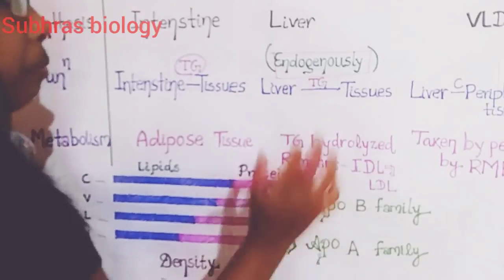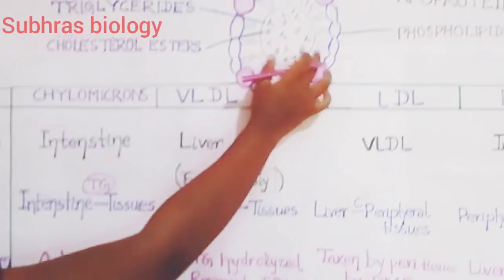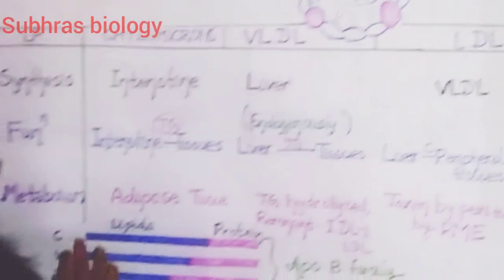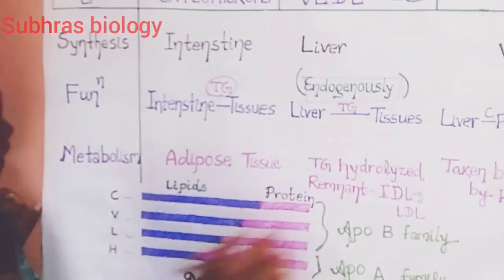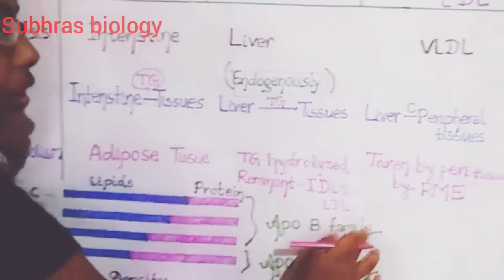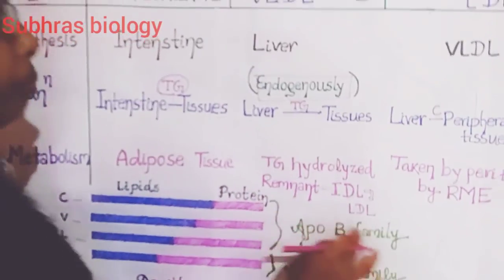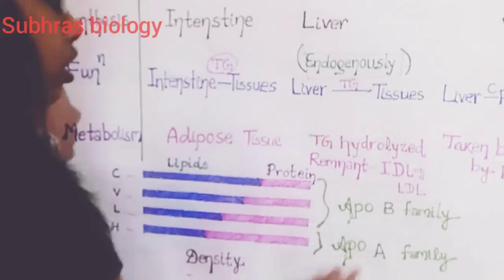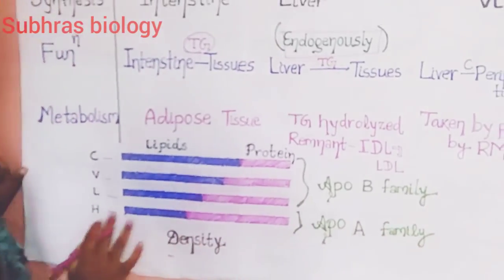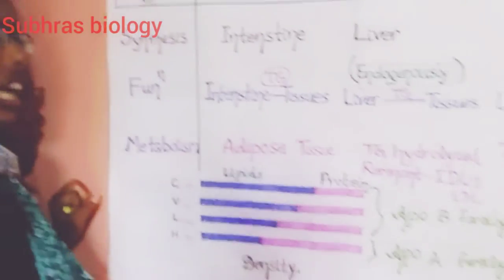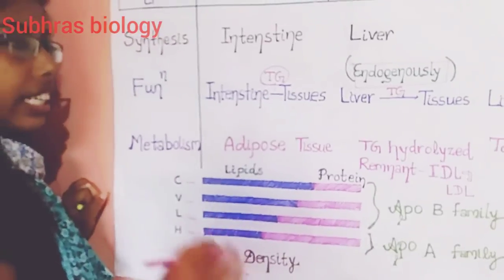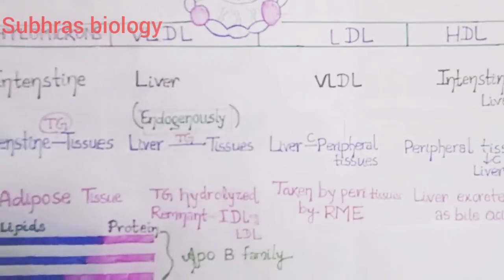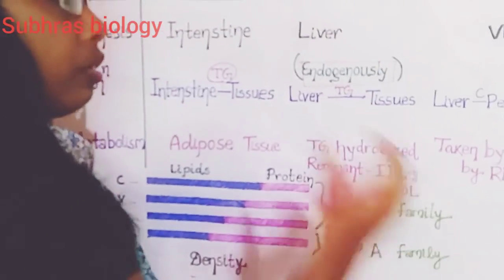These apoproteins are the proteins attached with the lipids. Chylomicrons, VLDL, and LDL are the ApoB family — you have to remember only two things: the ApoB family contains chylomicrons, VLDL, and LDL, and the ApoA family contains only HDL. HDL is good cholesterol and is anti-atherosclerotic because it helps in the excretion of cholesterol via the liver. The liver eliminates cholesterol as bile acids or for the formation of steroid hormones.